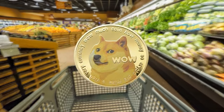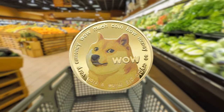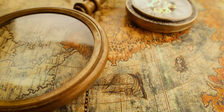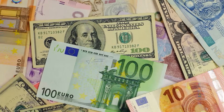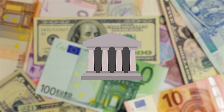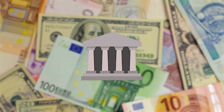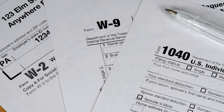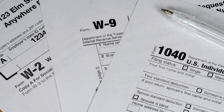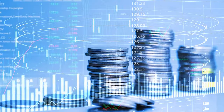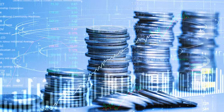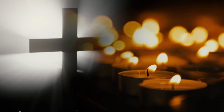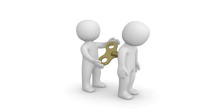If I tried to buy groceries with Dogecoin, the local grocery store probably wouldn't accept it. In the vast majority of cases throughout history, the money that people use is the currency issued and backed by a state or some sort of governing authority. Usually the tax imposed in that currency is what gives it its value, because the tax guarantees a demand for the currency and legitimizes its use. It's not just backed by faith — it's also backed by a little coercion.